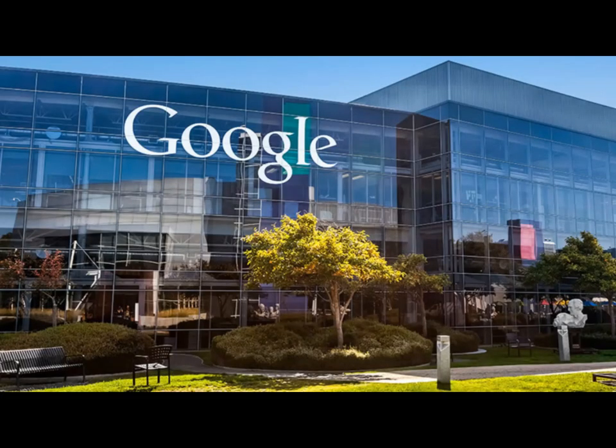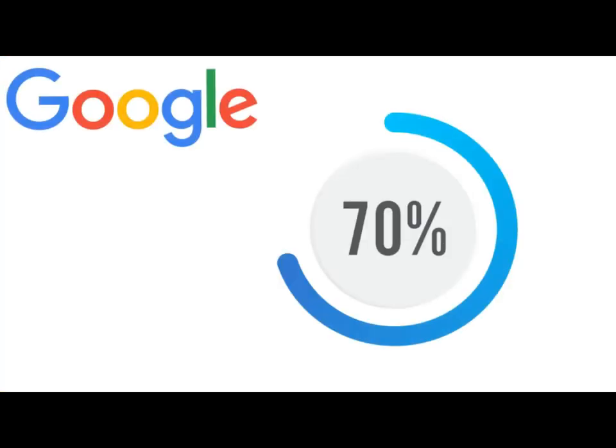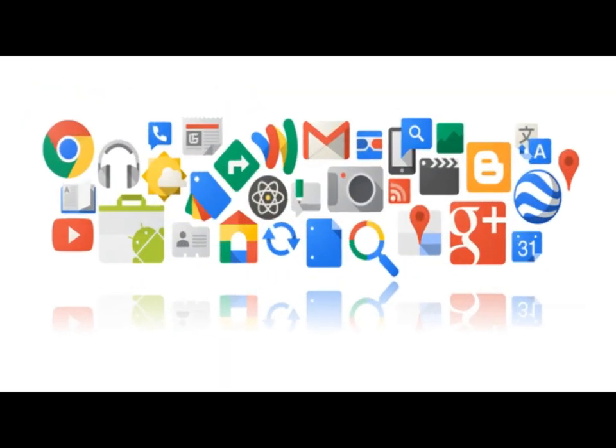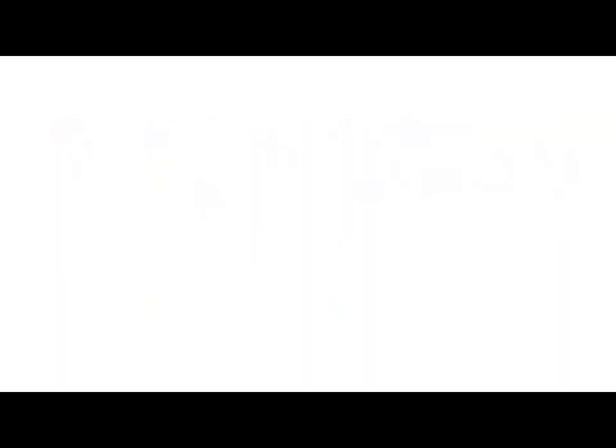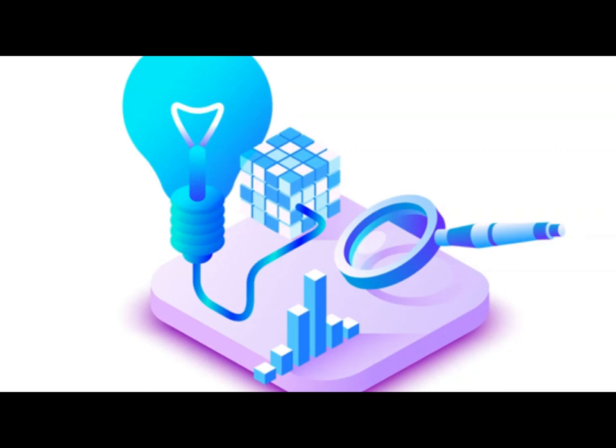Monopoly Example 5: Google. Google has become a household name — whenever we don't know any answer, probably googling is the answer. The biggest web searcher, with their secret algorithm, controls more than 70% market share. The company has grown into a web of services interlinked with each other, like Maps, Gmail, Search Engine, etc. The company has left its competitors behind with its innovation and technological advancement.